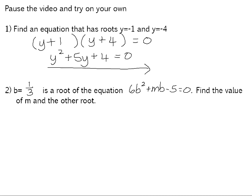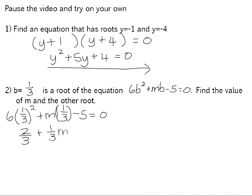Number 2: b equals one third is a root of the equation 6b squared plus mb minus 5 equals 0. Find the value of m and the other root. We first substitute b with one third in order to solve for m. That gives us 6 times one third all squared equals 2 over 3, because one third squared is one ninth and 6 ninths simplifies to 2 thirds. So we get 2 thirds plus one third m minus 5 equals 0. Working 2 thirds minus 5 gives negative 13 over 3; moving it to the other side gives positive 13 over 3. Multiplying both sides by 3 gives m equals 13.